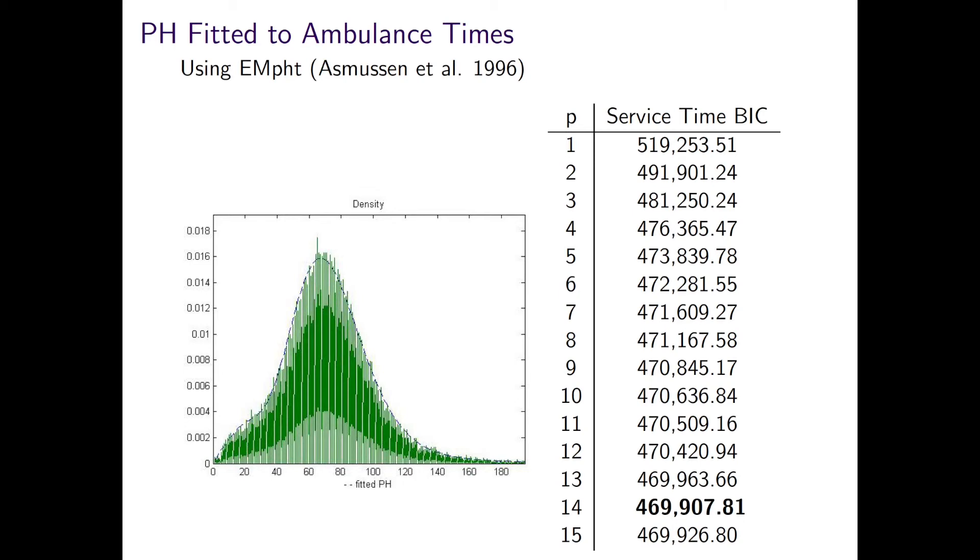Actually, other research we have done has indicated that four phases is sufficient when we've been looking at different types of ambulance vehicles, and that each phase could actually have an interpretation as being one of four phases of the ambulance journey. That is, travel to the patient, the time spent on scene with the patient, travel to hospital, and the turnaround time at the interface between the ambulance service and the emergency department.